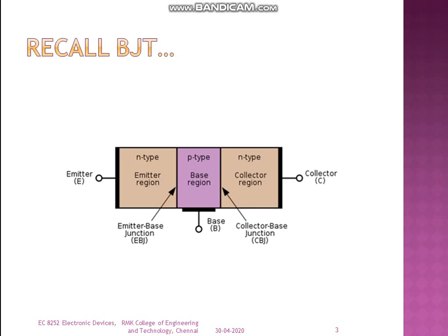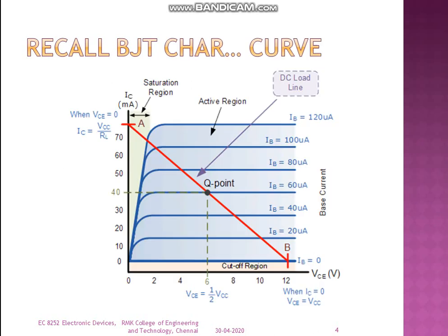The BJT structure has two junctions: the emitter-base junction and the collector-base junction. This is the output characteristics of the common emitter configuration, showing the output voltage versus output current, that is VCE versus IC. Recall that the BJT has three regions: the cutoff region, the active region, and the saturation region.